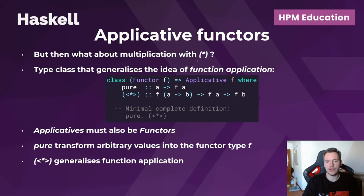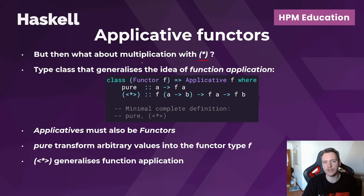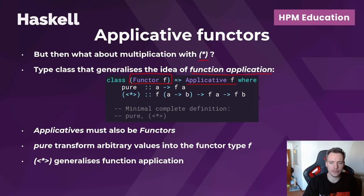We also need to think about every other operator or function we want to work with. If we replace the plus operator with multiplication, again we have to write a function for every type. So obviously there is something to abstract or generalize here, and that's simply the idea of function application, which the applicative functor class does. Here we have the definition of the type class — the class keyword, and then a type constraint of Functor f, meaning any f made an instance of Applicative must also be a Functor first. The Applicative type class has two main functions: pure and the less-than-star-greater-than operator, which I'll call applicative function application.